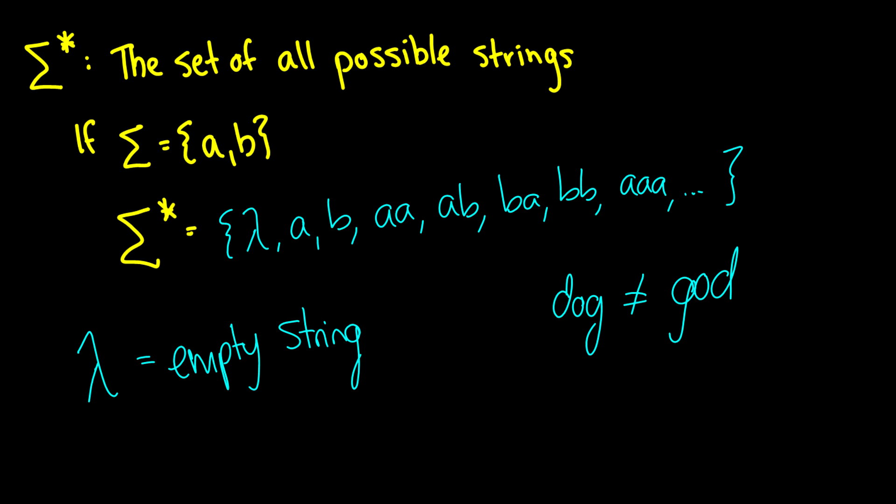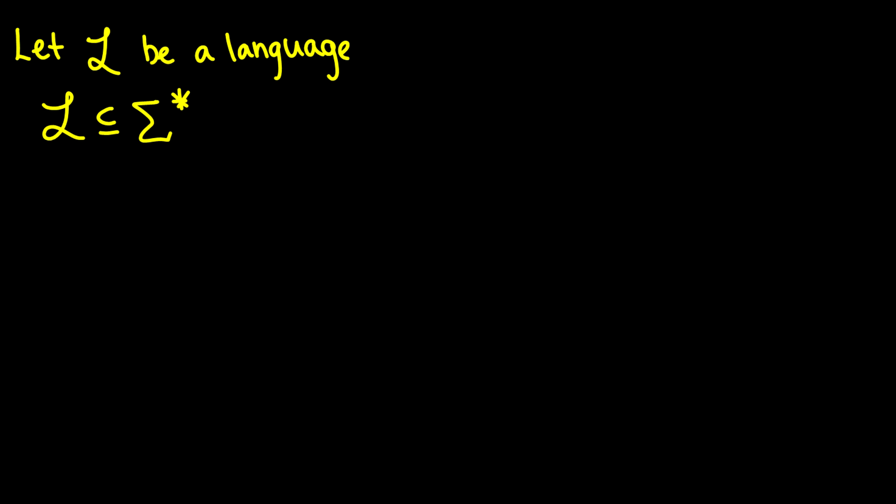But what I really want to get at are actual languages because we've just sort of been talking about alphabets and languages are a little bit interesting. Because we let L be our language, and L is always going to be a subset of our sigma star. So we can reject certain things.